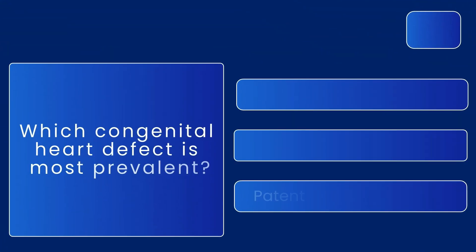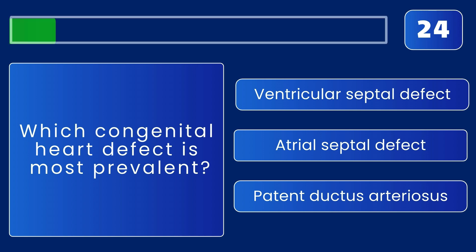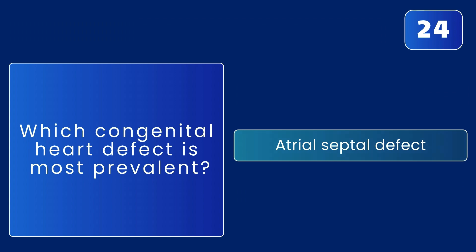Which congenital heart defect is most prevalent? The answer is atrial septal defect — it's a hole between the atria of the heart.